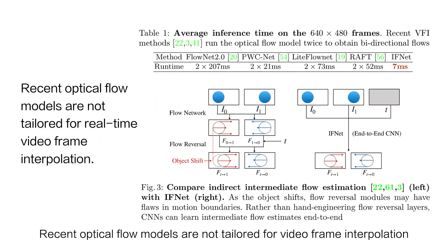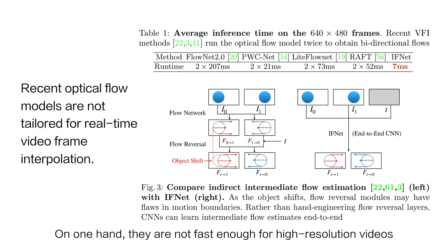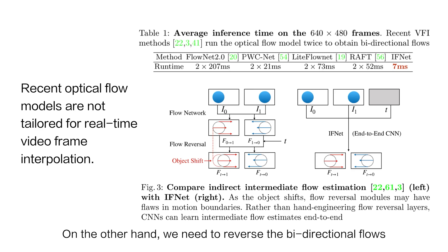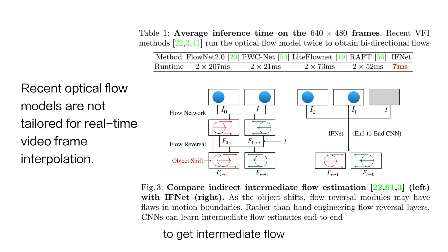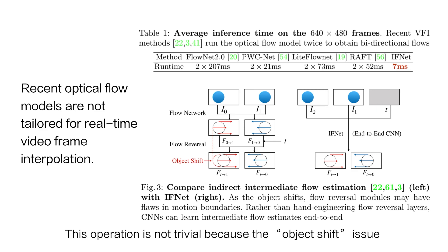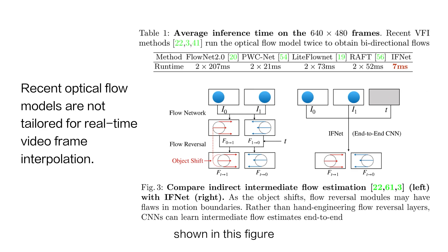Recent optical flow models are not tailored for video frame interpolation. On one hand, they are not fast enough for high-resolution videos. On the other hand, we need to reverse the bidirectional flows to get intermediate flows. This operation is not trivial because of the object shift issue shown in this figure.